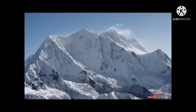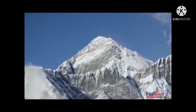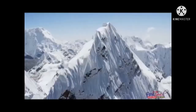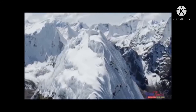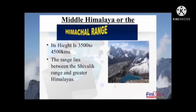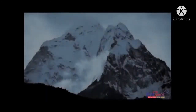The Himalayas stretch in a long arc from Jammu and Kashmir to Arunachal Pradesh. The Himalayas in India are made up of three ranges running parallel to each other: the Himadri, the Greater Himalayas, the Himachal or the Middle Himalayas, and the Shivalik or the Outer Himalayas. The Greater Himalayas is the northernmost range and also the highest of the three ranges.